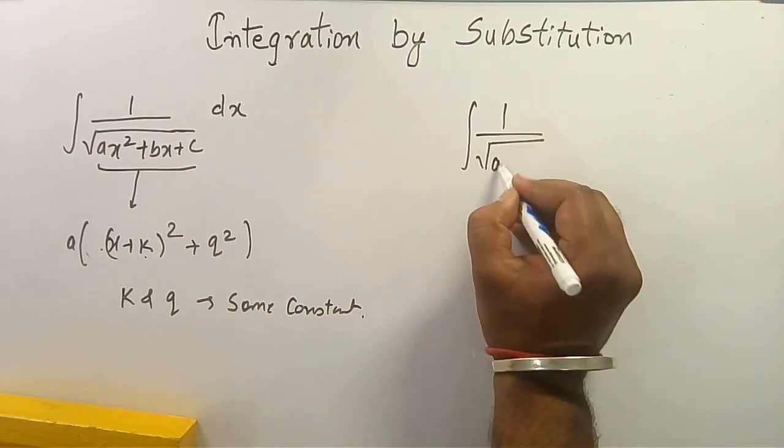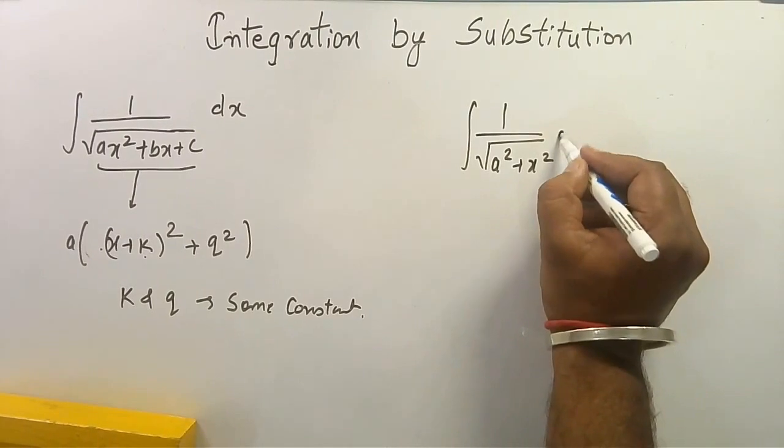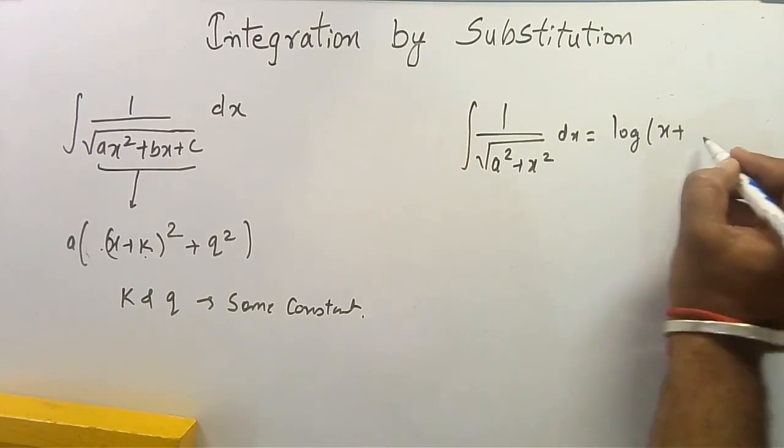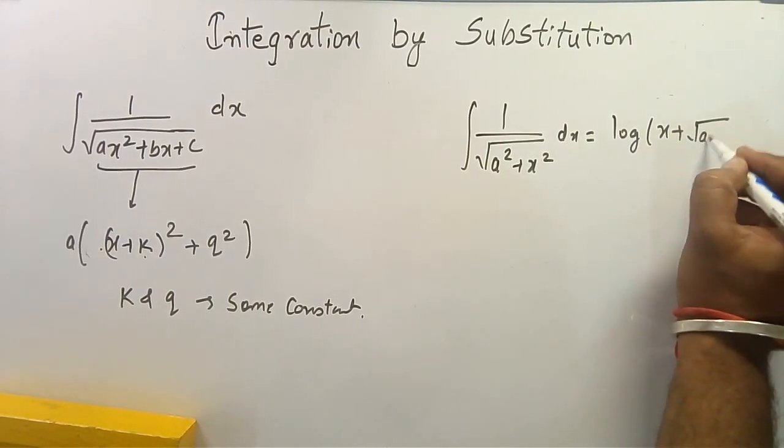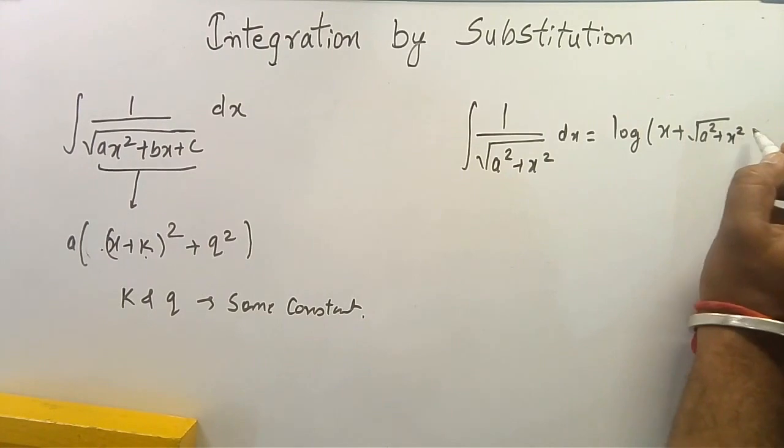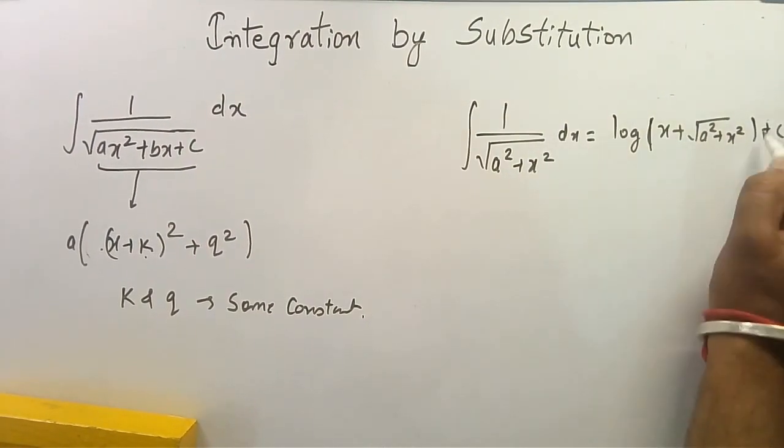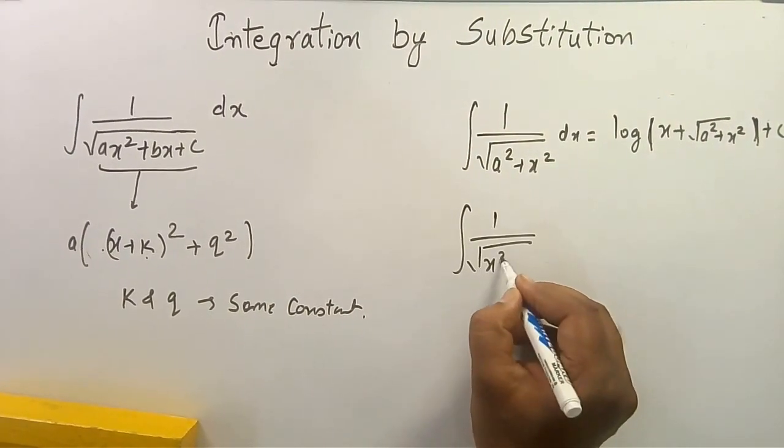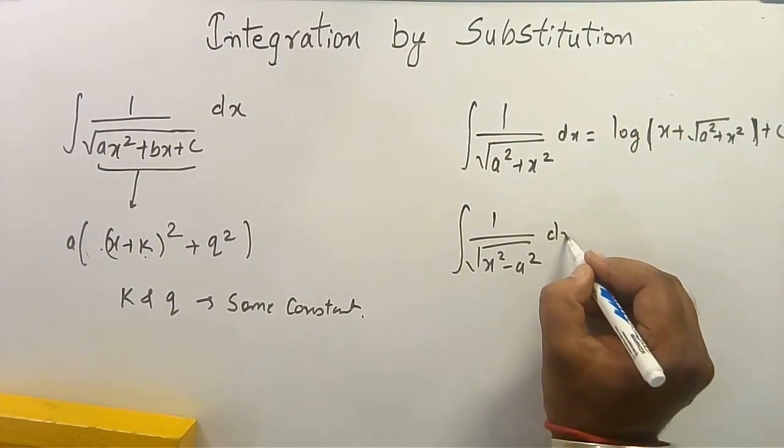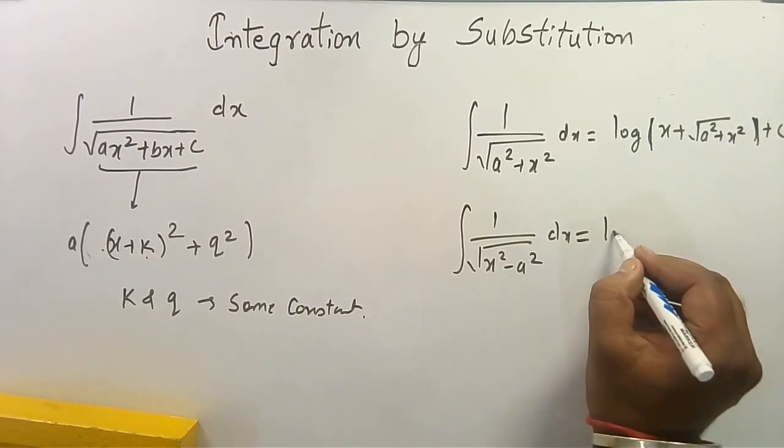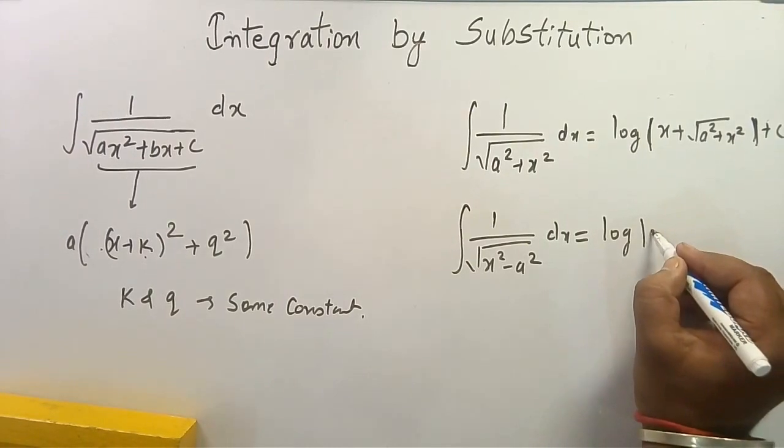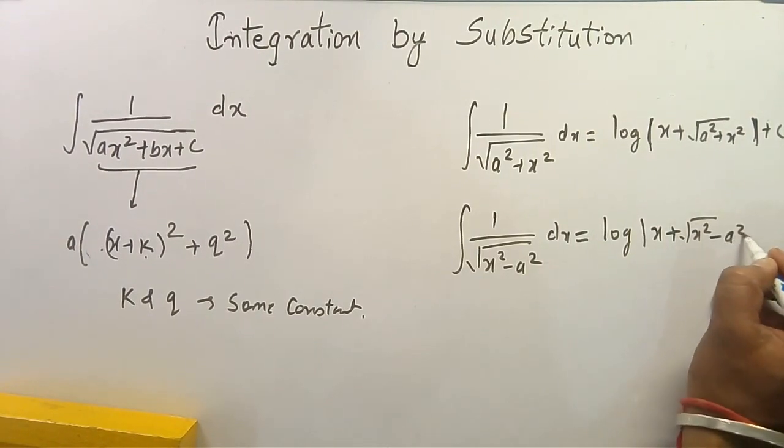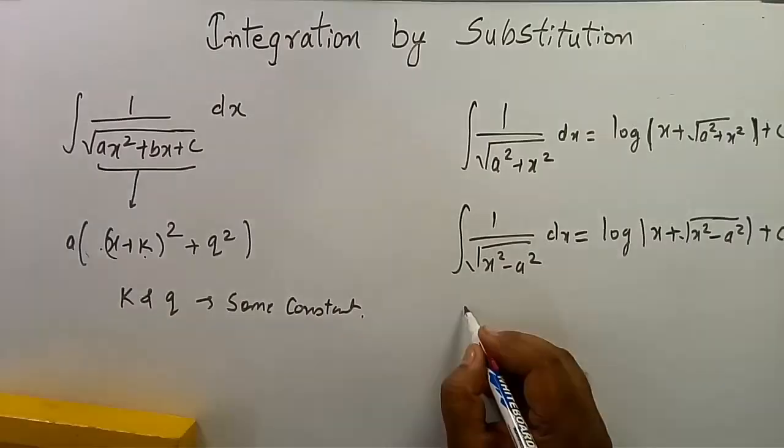The first formula: ∫1/√(a² + x²)dx = log(x + √(a² + x²)) + C. Or we can also use this formula which is equal to log(x + √(x² - a²)) + C.